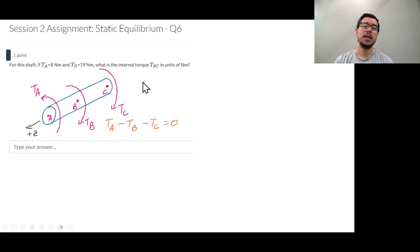The question is asking us what is the internal torque BC, so some slice in between B and C in units of newton meters. We see that external equilibrium has already been completed for us in the form of this equation.